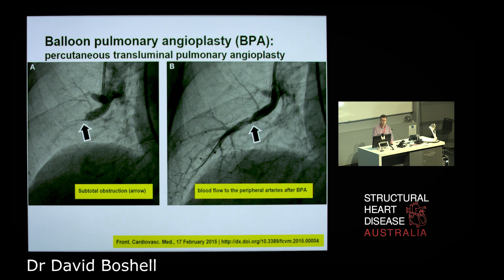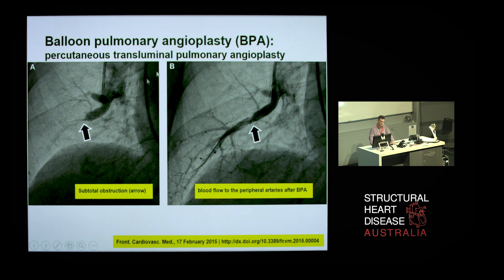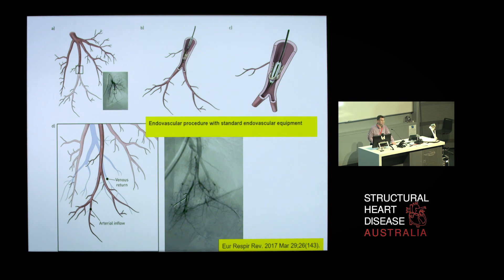What is balloon pulmonary angioplasty? It is percutaneous transluminal angioplasty performed in the pulmonary arteries. Here's a picture demonstrating the subtotal obstruction of a right lower lobe pulmonary artery and the immediate post-treatment angiographic result after opening that with a balloon. It is a standard endovascular procedure using standard endovascular equipment. Angiographic lesions are selected by the interventionalist, a wire is negotiated across the lesion, the lesion is treated with a balloon, and that should hopefully increase the flow.